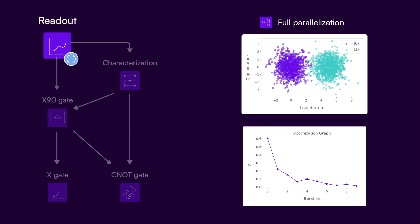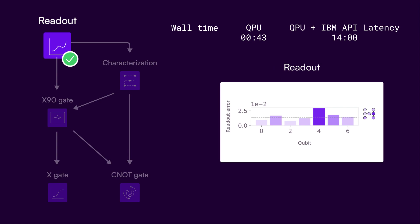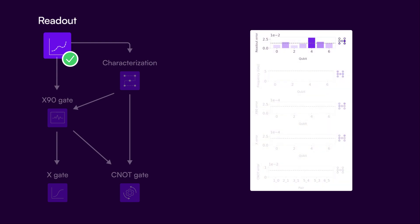As the optimizer iteratively reduces a pre-configured cost, you see an increasing separation of the readout clusters associated with the two qubit states. Larger separation allows higher fidelity readout. The scheduler reduces the readout error to below a few percent across all devices. This process only took 43 seconds of QPU time and was completed in just 14 minutes when accounting for the IBM API latency.